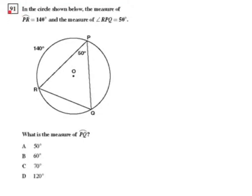Question 91 from the CST Geometry Released Test Questions. In the circle shown below, the measure of arc PR is 140 degrees, and the measure of angle RPQ is 50 degrees. What is the measure of arc PQ?